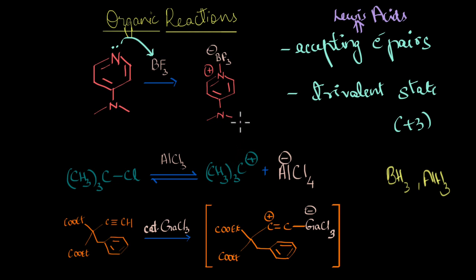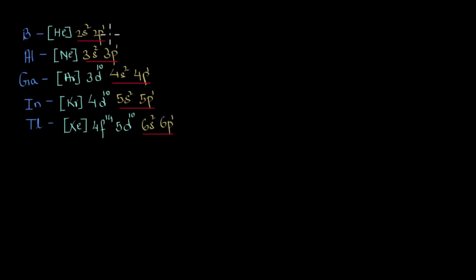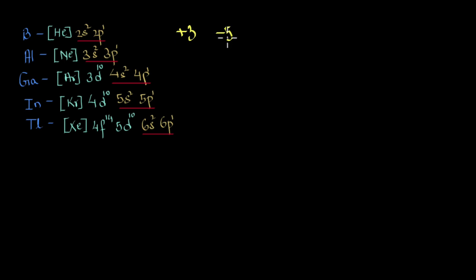We will see why they act as Lewis acids and where we can use this behavior. Group 13 elements have three electrons in their valence shell — two in the s orbital and one in the p orbital. To attain a stable electronic configuration, an atom needs to either lose three electrons or gain five electrons. Of course it would prefer losing three — why would any atom want to gain five electrons and become so unstable?